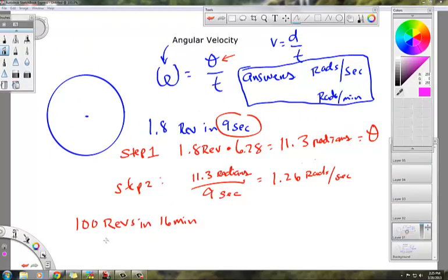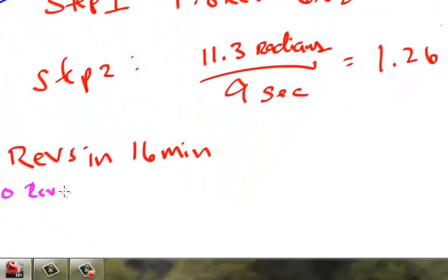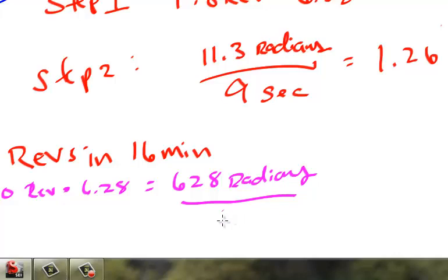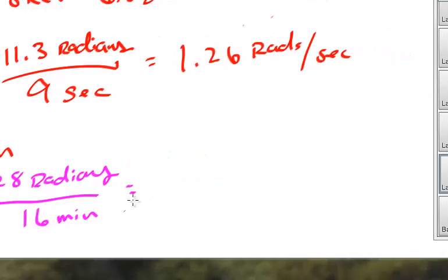All right, hopefully you paused that and you worked this problem out. Step 1, I'm not going to write the steps, but you would just take 100 revolutions times 6.28. That's what happens when I try to write small, and this will be 628 radians. And then, you just divide this by the time interval, which is 16 minutes. And when you put that all together, 628 radians by 16 minutes will turn into 39.3, and that is rounded, radians per minute.